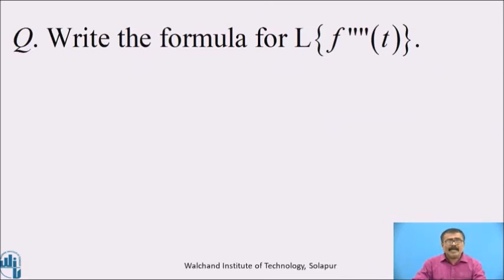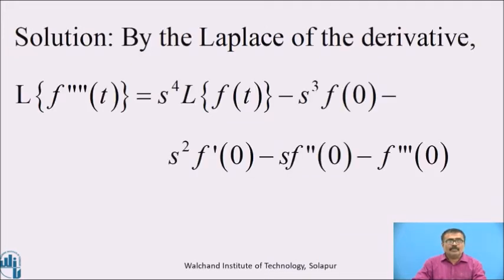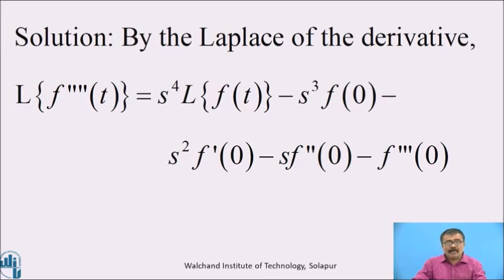Pause the video and write the formula for f^(4)(t). I hope all of you have written the answer. By the Laplace transform of the derivative, L{f^(4)(t)} = s⁴·L{f(t)} − s³·f(0) − s²·f'(0) − s·f''(0) − f'''(0).